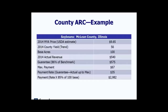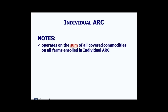For soybeans in McLean County, the same type of calculation produces a benchmark of $669 per acre and a guarantee of $575 at 86%. Using a USDA estimate of $9.65 for soybeans on the 2014 market year average and a trend yield of 56 bushels per acre with 100 base acres, actual revenue would be $540. The payment rate would be $35 per acre, or $2,982 on 85% of the 100 base acres of soybeans.